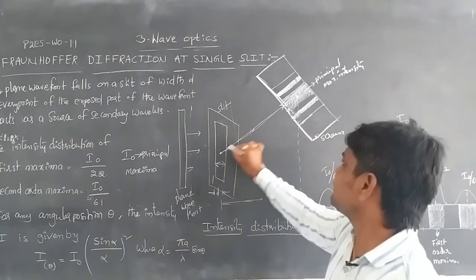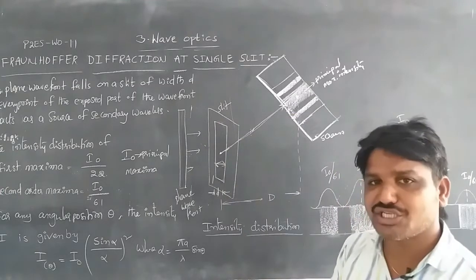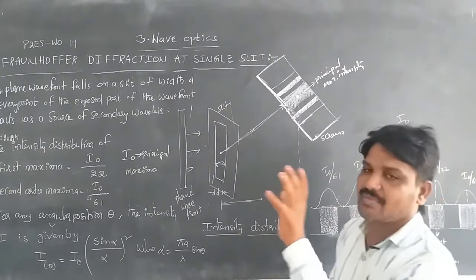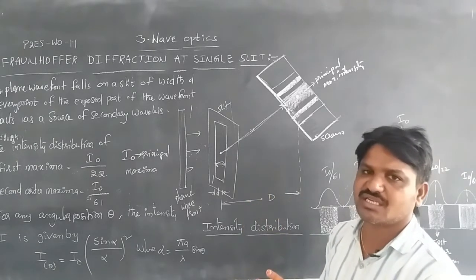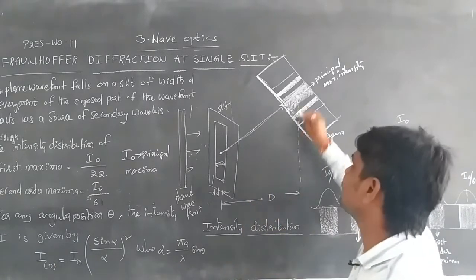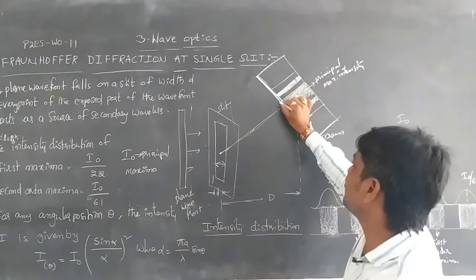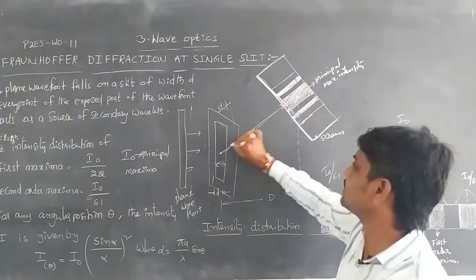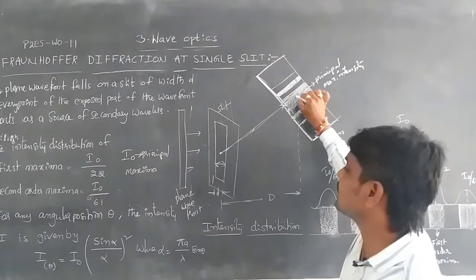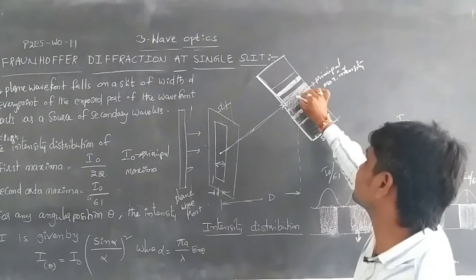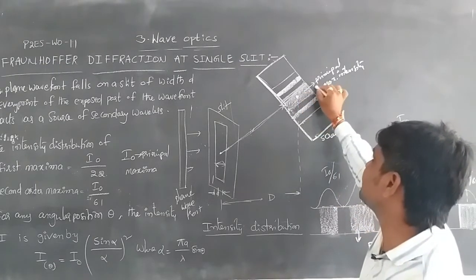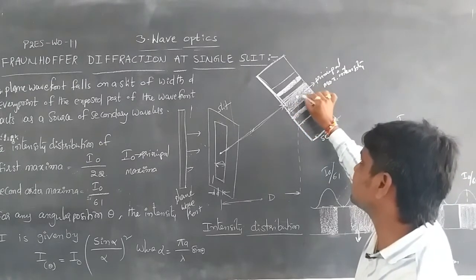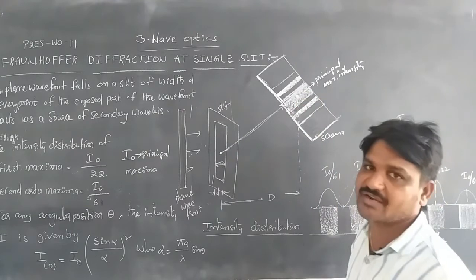As light passes through the slit, the intensity is distributed across various regions of the screen, showing maximum and minimum intensity values. At the center of the screen, a bright band is formed — this is called the principal maximum intensity, and it is the most bright fringe.